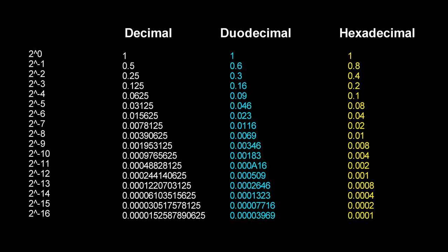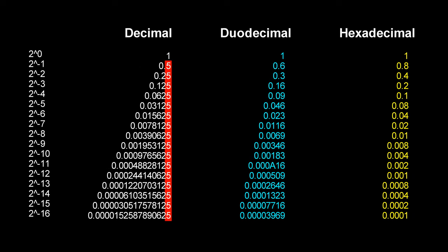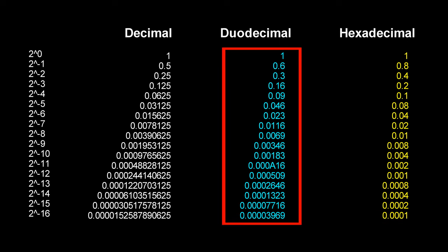Here is what happens if you keep halving one in decimal, duodecimal and hexadecimal. In decimal and duodecimal the numbers are very messy, but in hexadecimal the last digit goes 1, 8, 4, 2, adding a zero to the beginning every time one changes to eight. In decimal it gets one digit longer every time you halve it; in duodecimal it gets one digit longer every two times you halve it; and in hexadecimal it gets one digit longer every four times you halve it. When it comes to halving one, hexadecimal is the best, followed by duodecimal, and decimal is the worst.